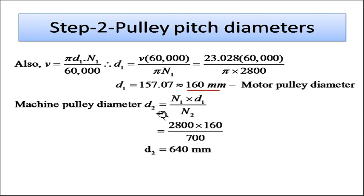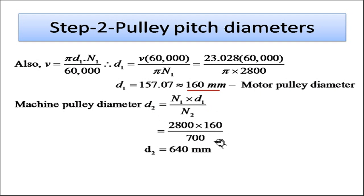For the machine pulley diameter, using the velocity ratio: d2 = n1 × d1 / n2 = 2800 × 160 / 700 = 640 mm. Now we calculate belt tensions. First, we find the angle of wrap for the smaller pulley, since its angle of wrap is less than the larger pulley.